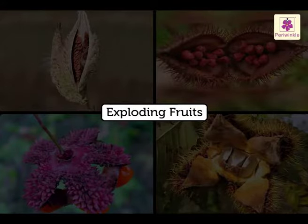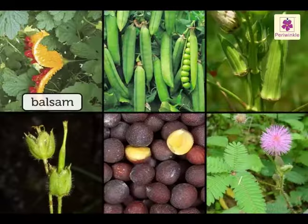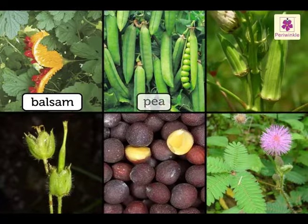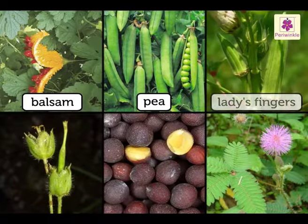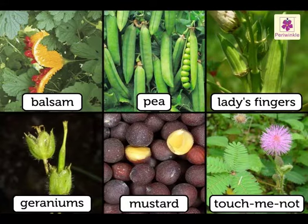Exploding fruits: Some fruits crack open on ripening and scatter their seeds. Balsam, pea, lady's fingers, geraniums, mustard, and touch-me-not plants disperse their seeds this way.